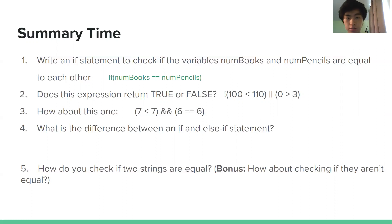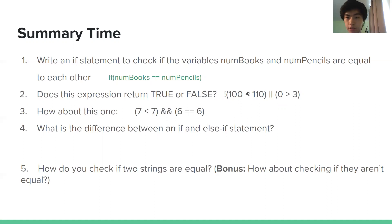Number two: does this expression return true or false? So 100 less than 110 is true. However, there is an exclamation point on the outside, so that flips the entire thing to false. On the other side of the pipes, we have zero greater than three, which is false. So both sides are false, meaning the entire thing ends up false. With pipes, only one side has to be true for the entire thing to be true. With AND, both sides have to be true. We see that seven is not less than seven — that's false — so the entire thing ends up false.